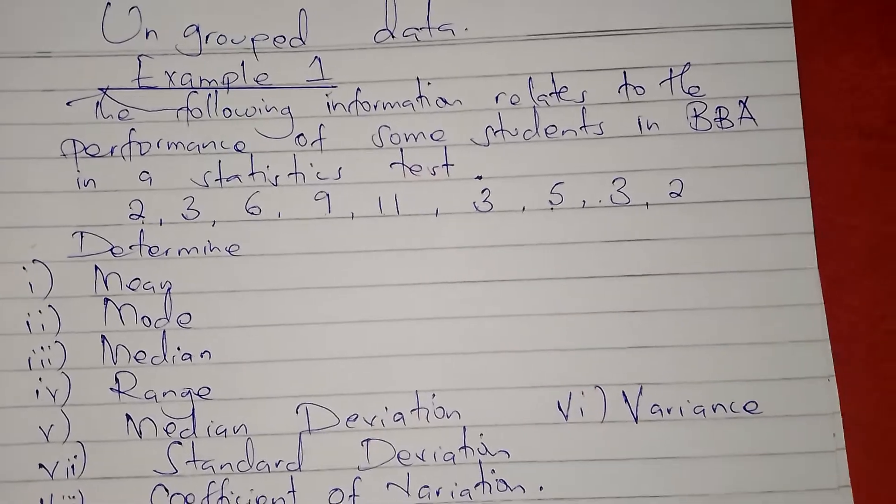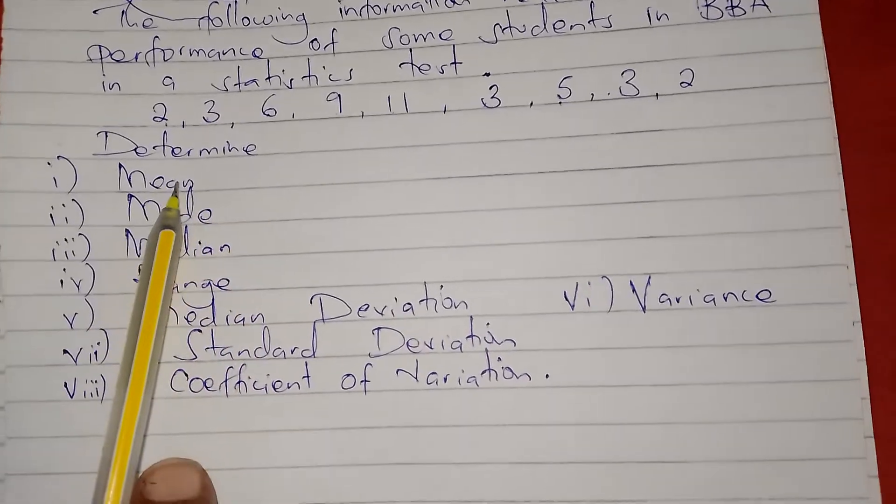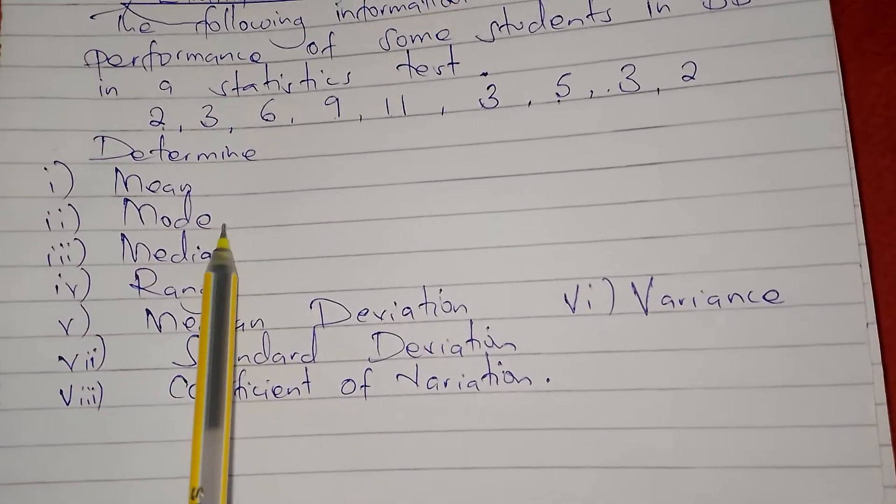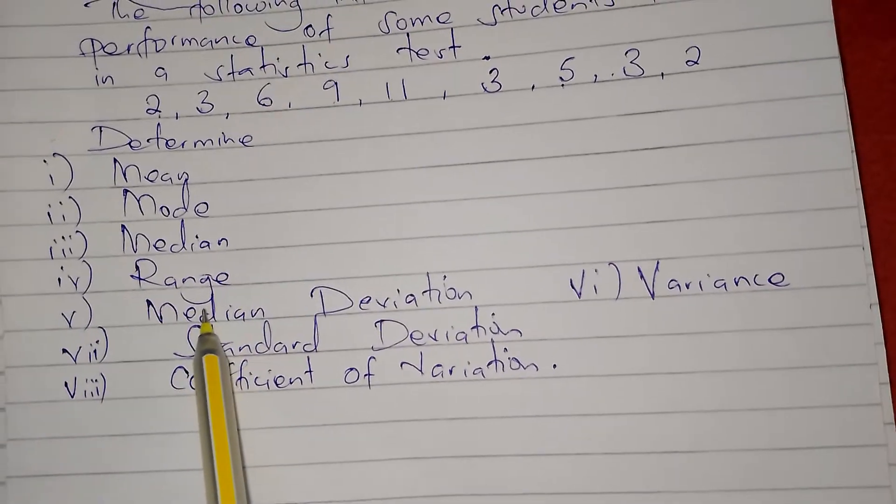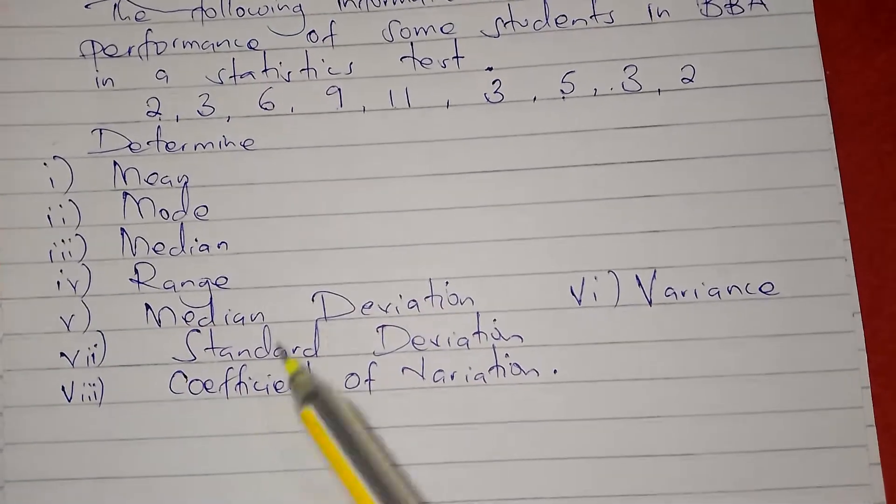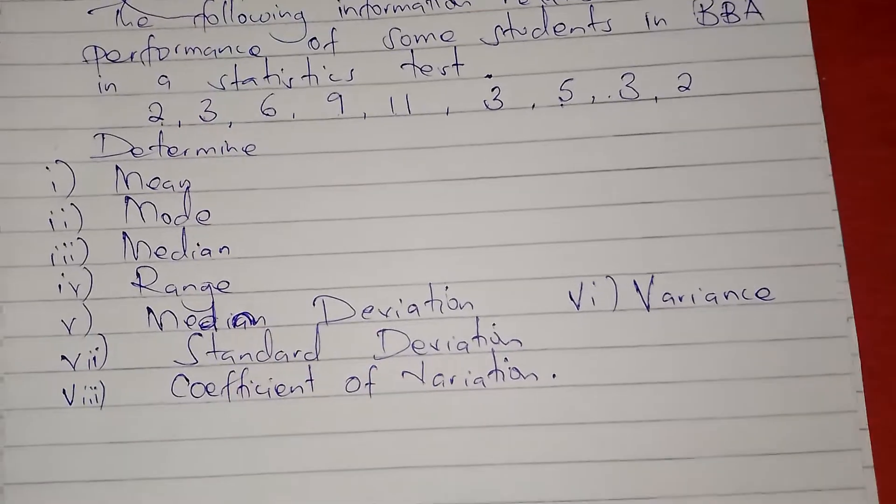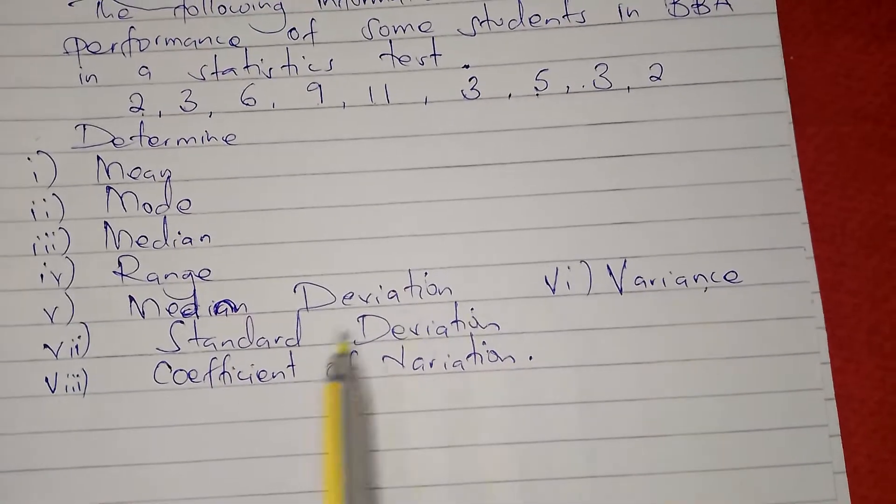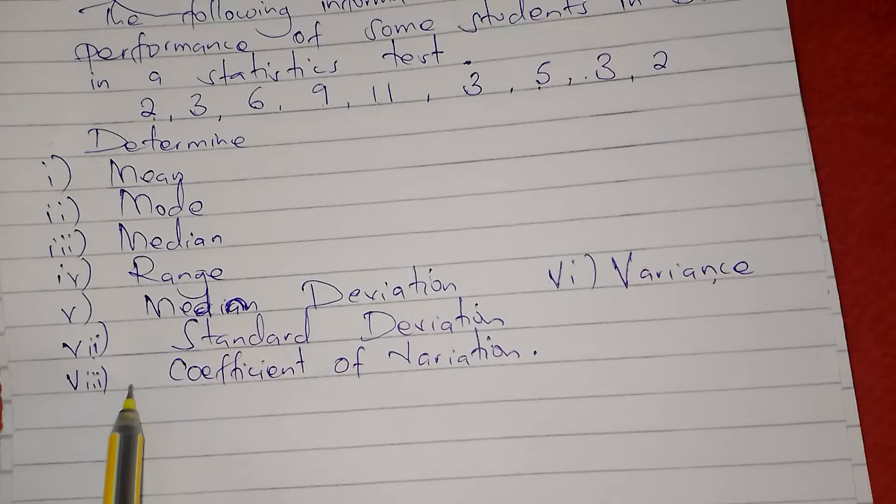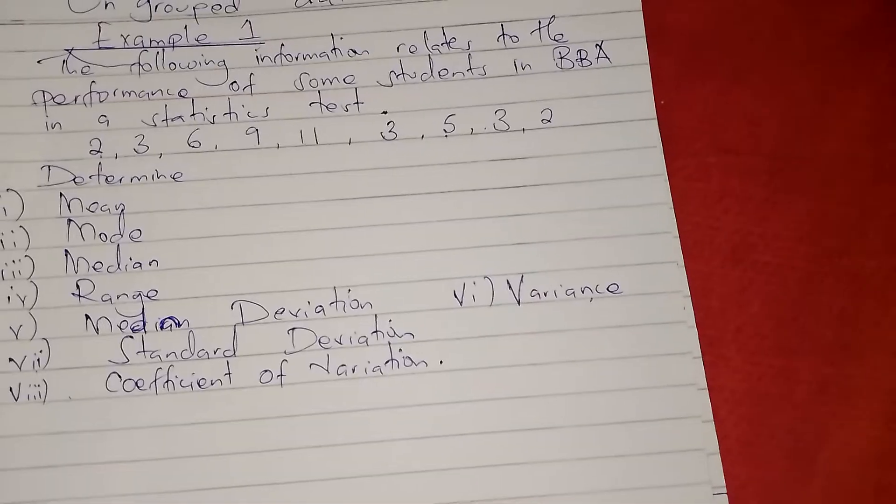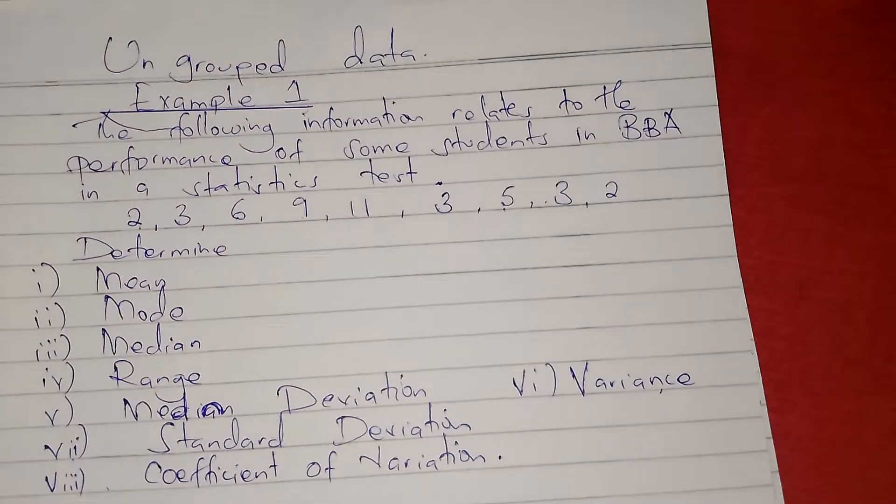The data is ungrouped, they've just given us the marks. They want us to determine: A) the mean, B) mode, C) median, D) range, E) mean deviation, F) variance, G) standard deviation, and lastly H) coefficient of variation.